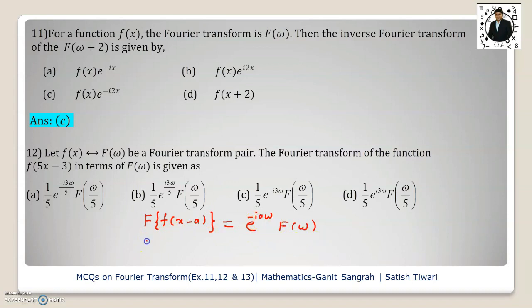As well as we apply the property change of scale. It is given by Fourier transformation of f of ax equals to 1 by a f bar of omega by a. If you apply the shifting property as well as change of scale property, the answer will be C.